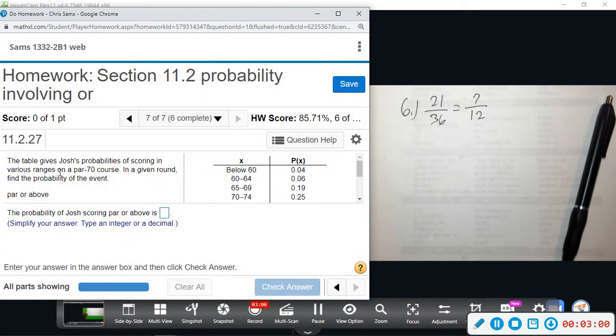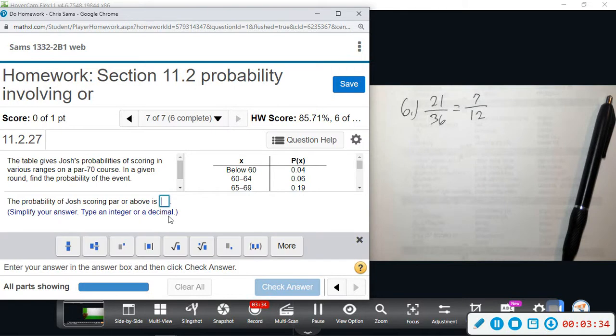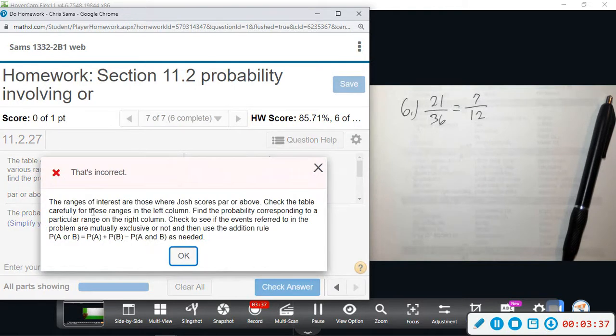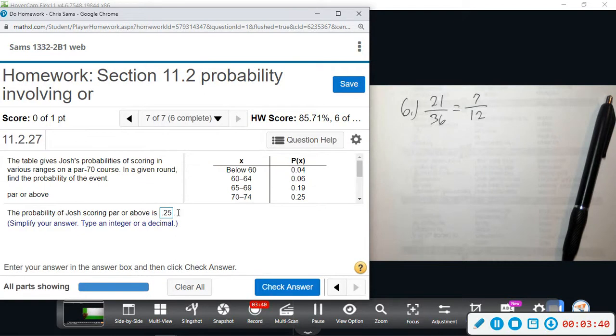Alright, so now we have number seven. This table gives probability of scoring in different ranges in a given round. Find the event of par or above. So this is on a par 70 golf course. That means that you have to get 70 or below. And we want to know par or above, so which ones did more than 70? So this right here, 70 or above, is 0.25. The probability of going par or above is just 0.25.